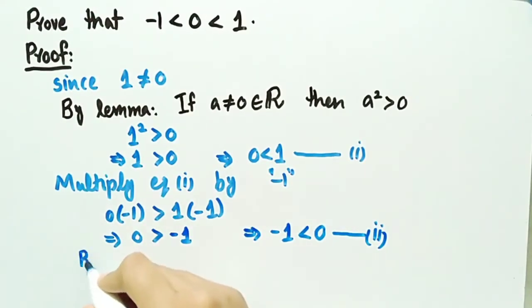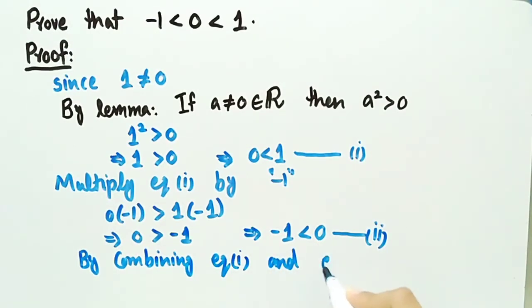By combining equations 1 and 2, we get -1 < 0 < 1, which is the required result.